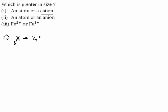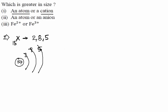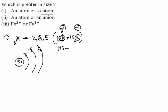The electronic configuration of X is 2, 8, 5 — two electrons in the first shell, eight in the second, and five in the third. Inside the nucleus there are 15 protons. So total positive charge is +15, and with 15 electrons the total negative charge is -15. That gives a net charge of zero.